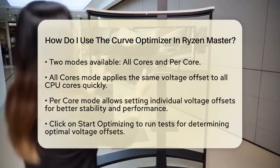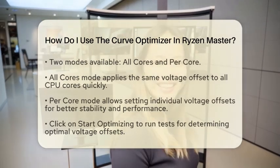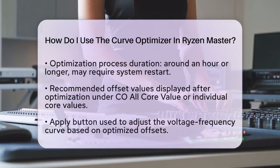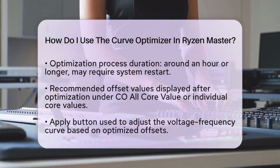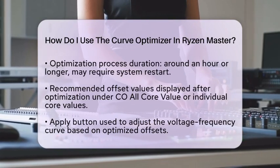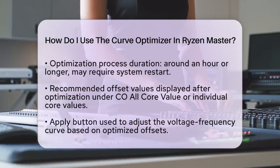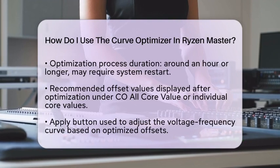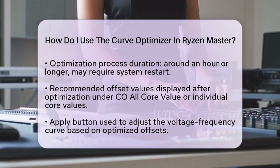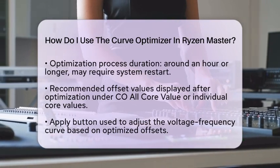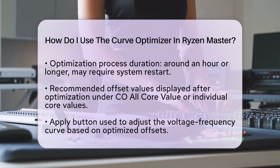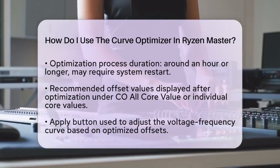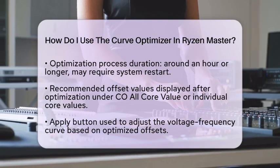Once the optimization is complete, Ryzen Master will show you the recommended offset values. You will see these values under a section labeled Co All Core Value, or Individual Core Values if you chose the Per Core option. To apply these settings, simply click the Apply button.